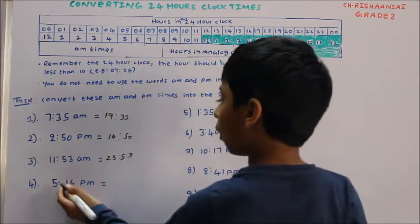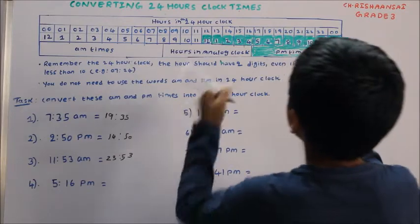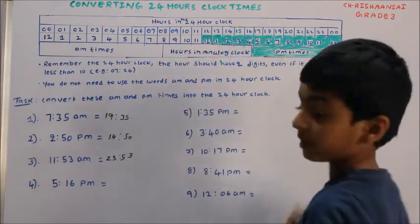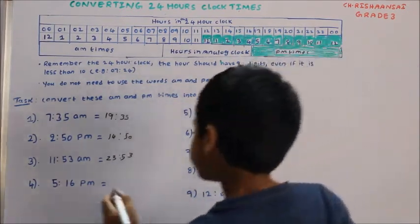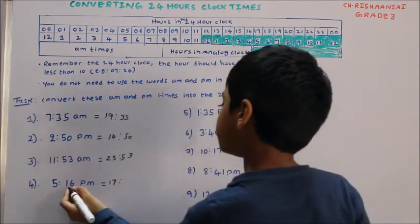5:16, so here is 5 and up there is 17, so we write 17 here. And put two dots and write 16.